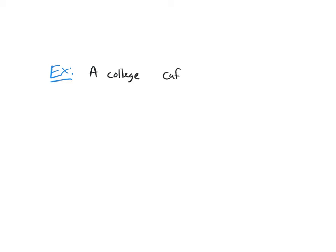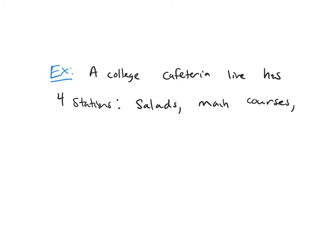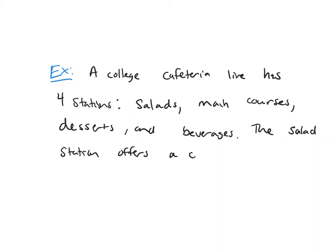Let's look at this example. A college cafeteria line has four stations: salads, main courses, desserts, and beverages. The salad station offers a choice of green salad or fruit salad.